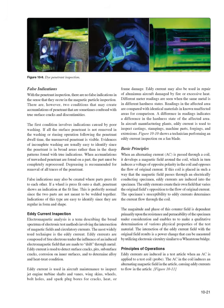False indications: With penetrant inspection, there are two conditions that may create accumulations of penetrant sometimes confused with true surface cracks. The first involves indications caused by poor washing — if all surface penetrant is not removed, unremoved penetrant is visible in broad areas rather than sharp patterns. When accumulations of unwashed penetrant are found, the part must be completely reprocessed and degreased. The second condition involves parts that are press fit to each other — penetrant shows an indication of the fit line, which is normal and easy to identify as regular in form and shape.